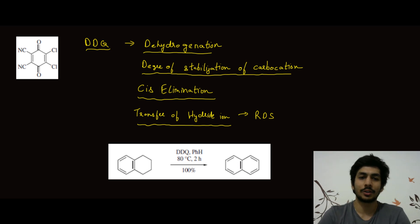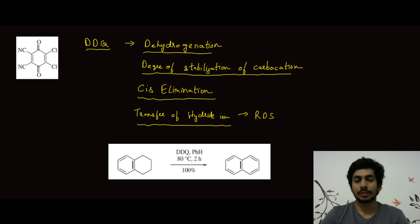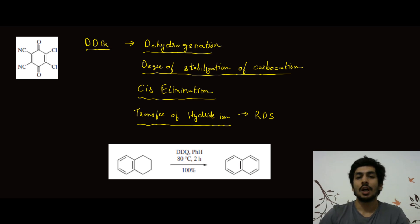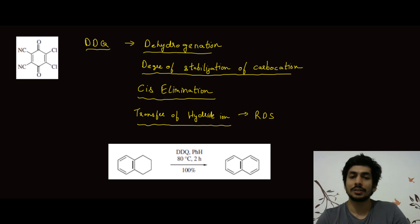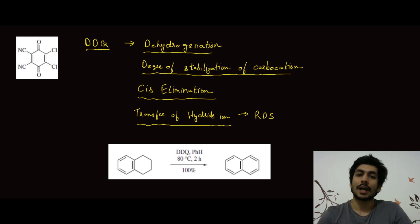Welcome to another video on reagent chemistry. Before I move on to the topic — DDQ — I want to share something important. A reagent can show thousands of reactions, and it's impossible to discuss all of them. What we can do is categorize those reactions or understand the mechanism by which they undergo a particular transformation. Those of you who are smart will understand that it's more important to focus on the mechanistic point of view.